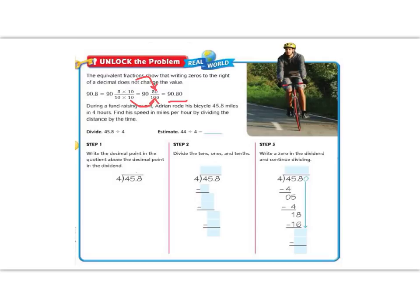But we know that that doesn't change the value of the original decimal. So today we're going to use that adding a zero on the end, which doesn't change its value, to divide and get a decimal answer. So today we're going to divide. A fundraising event, Adrian rode his bicycle 45.8 miles in 4 hours.